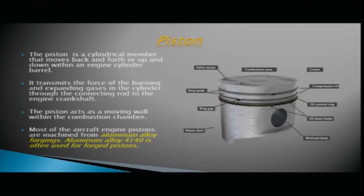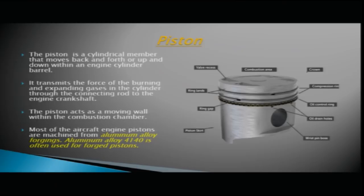Most aircraft engine pistons are machined from aluminium alloy forgings — aluminium alloy 4140 is often used. Just above the piston is the combustion area where the fuel and air mixture burns, and the pressure created moves the piston up and down.